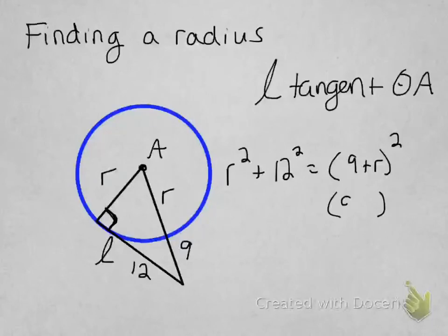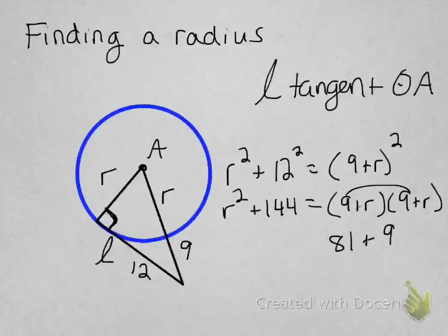Okay, so you got to multiply this out. 9 plus r times 9 plus r equals 81 plus r squared. You get 81 plus 9r. There's that one.